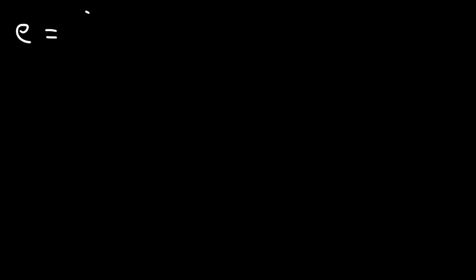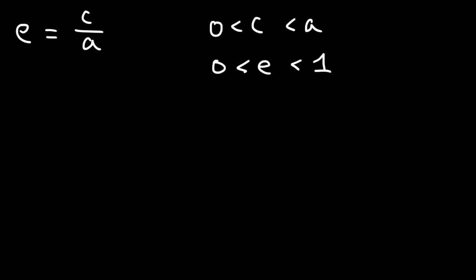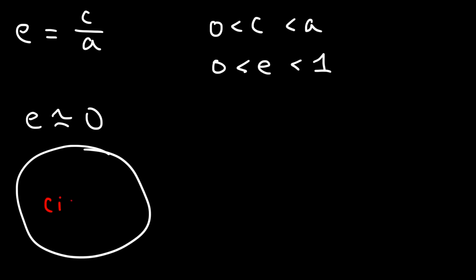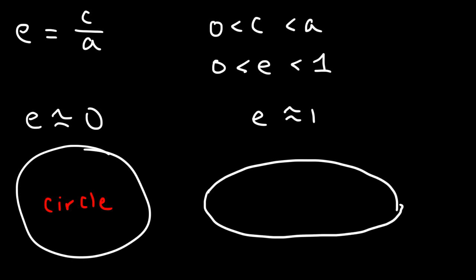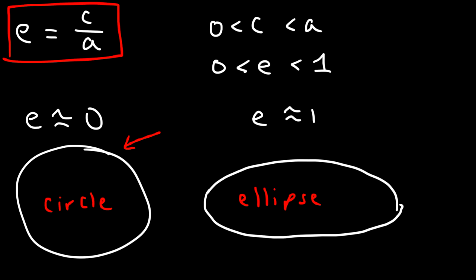What exactly is the eccentricity of an ellipse? The equation for it is e = c/a, where c is between 0 and a. The eccentricity is measured between 0 and 1 for an ellipse. If e is very close to 0, the ellipse will appear to be circular. If e is exactly 0, you no longer have an ellipse — you have a circle, which means c would be 0. If e is close to 1, the ellipse will appear more oval and elongated. So eccentricity describes the shape of an ellipse — whether it appears circular or oval.